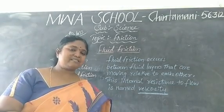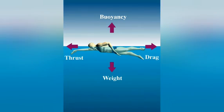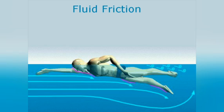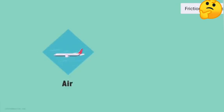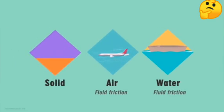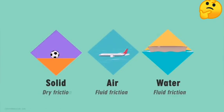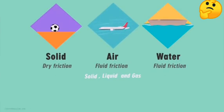Still, a few more examples we can see for fluid friction. The friction we have seen between solid parts is not the only kind. Friction is also offered by fluids like air and water. This force of friction due to fluids is referred to as fluid friction, while friction between solid parts is referred to as dry friction. The major states of matter are solid, liquid, and gas. Liquids and gases are generally referred to as fluids.